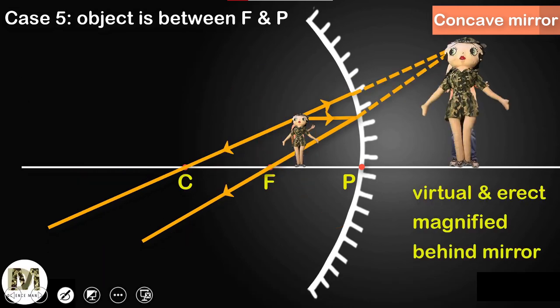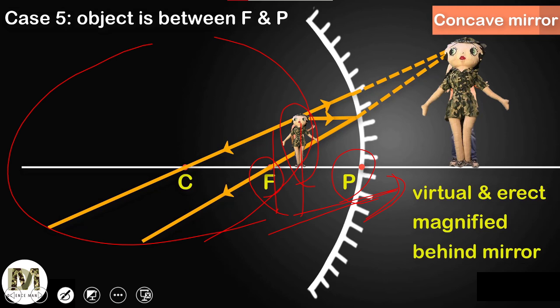Case 5: we place the object between the focus and the pole. Until now, image was forming on the same side of the mirror. But when the object is placed between focus and pole, the image forms behind the mirror. And the nature of the image also changes — it will be virtual and erect, and it will be a magnified image.